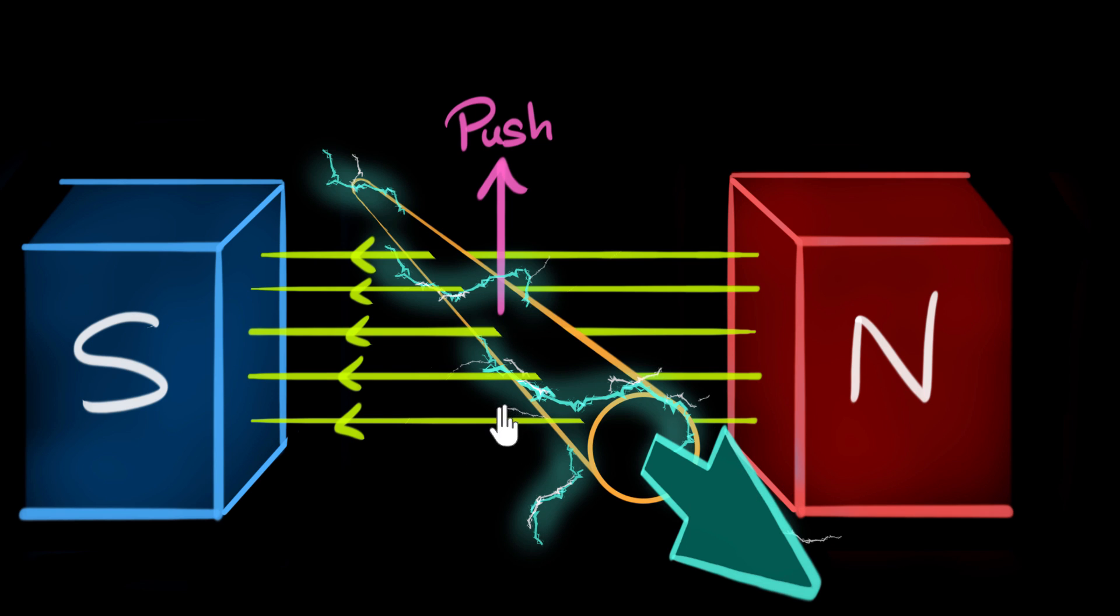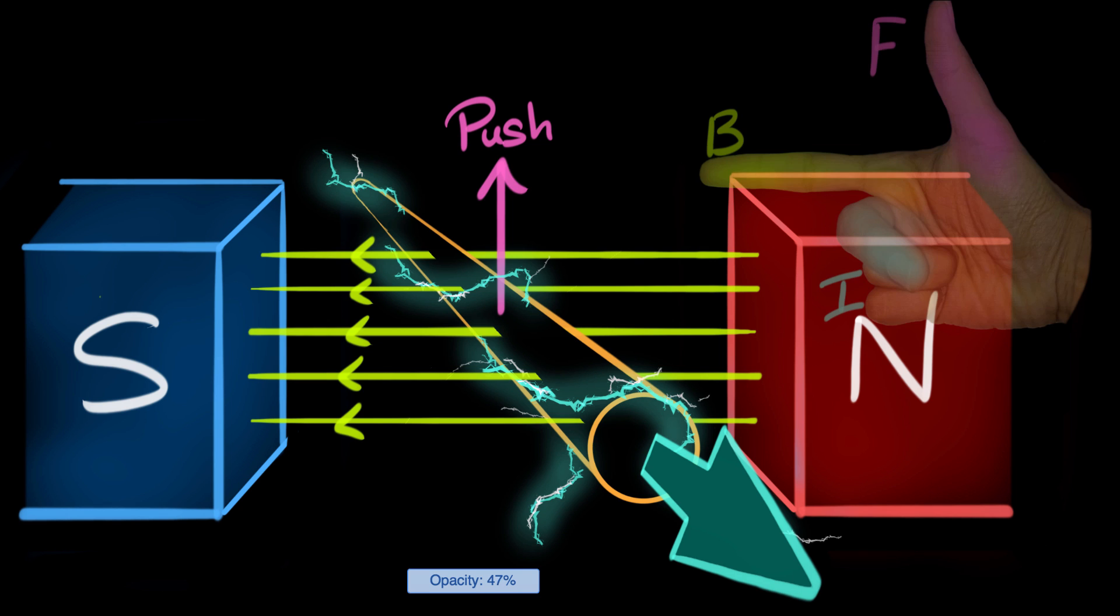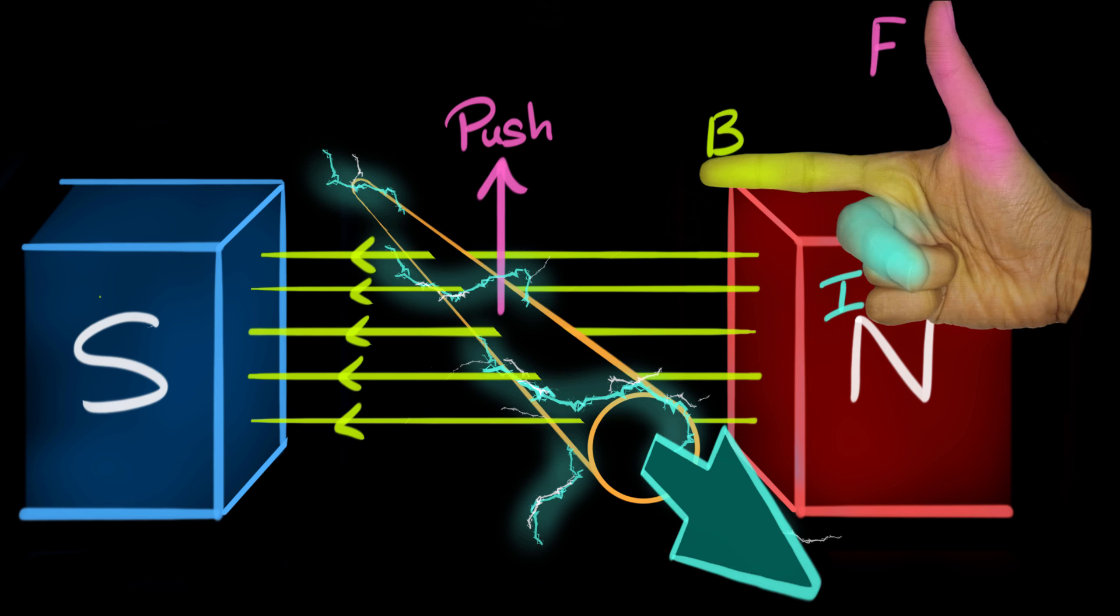This can be remembered by using something called the right hand generator rule. What we do is we take our right hand and we stretch the three fingers: the thumb, the forefinger, and the middle finger, such that they are perpendicular to each other. This is perpendicular to this, and even these two are perpendicular to each other. Stretch them so they're all perpendicular to each other.